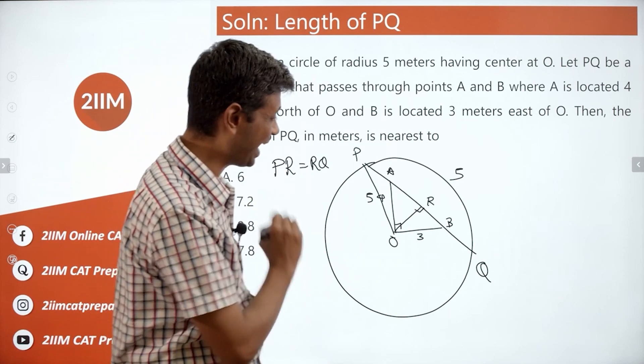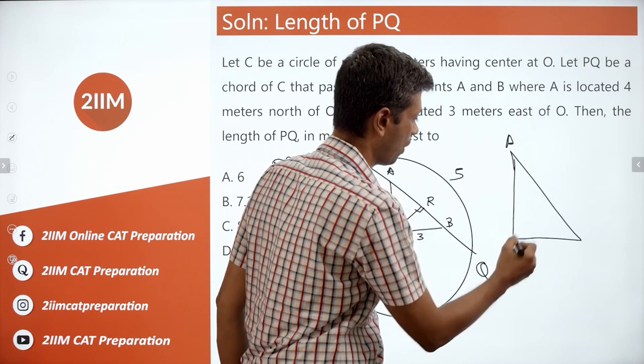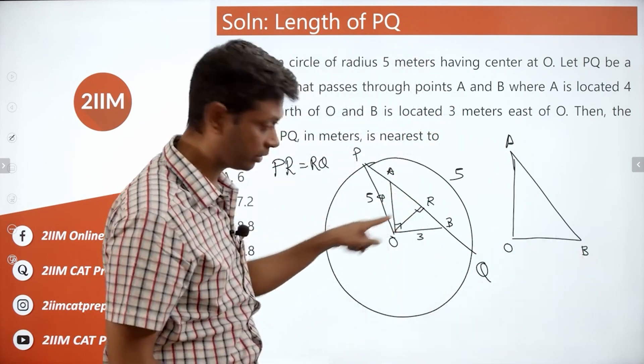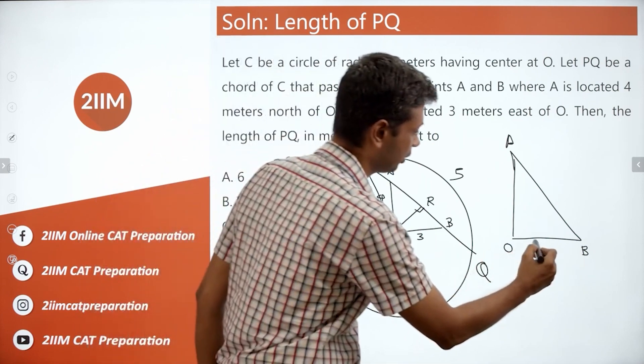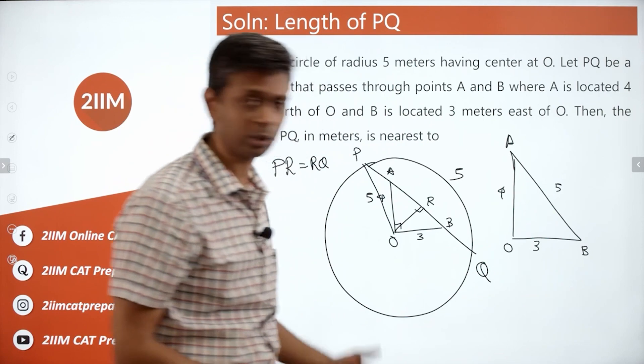Think about this triangle A, O, B. I want to draw this triangle. Make it bigger. A, O, B. We want to find OR in this. So this is 3, this is 4, this is 5. 3, 4, 5, Pythagorean triplet.